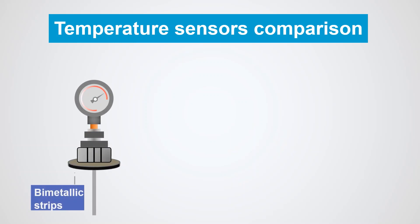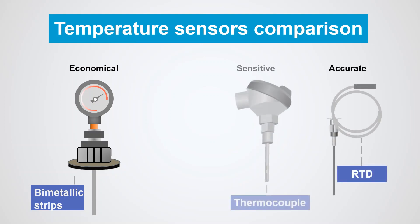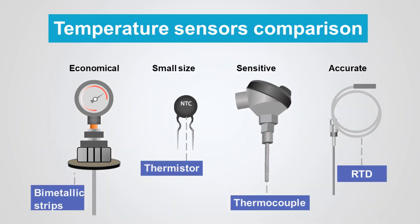Bimetallic strips are economical and can be selected for low-cost projects. If accuracy is required and is considered as the key performance indicator, usually RTDs are better than thermocouples, approximately 10 times more accurate. From the sensitivity point of view, while both RTDs and thermocouples respond quickly to temperature changes, at similar costs, thermocouples are often faster. Thermistors can be selected if temperature measurement is to be carried out in a small space.